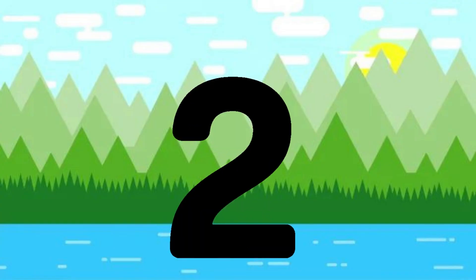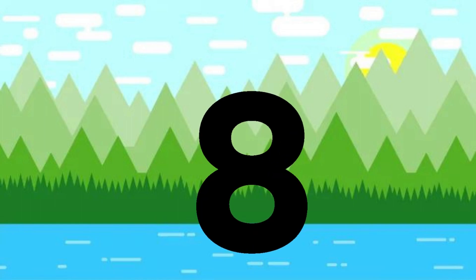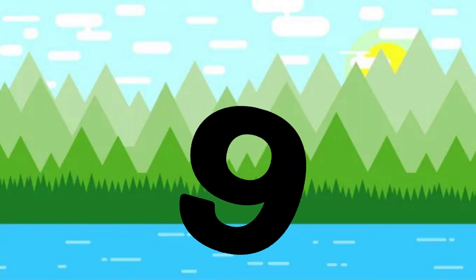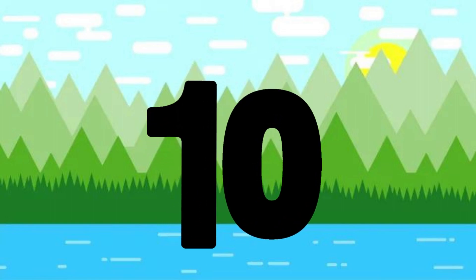One little, two little, three little numbers. Four little, five little, six little numbers. Seven little, eight little, nine little numbers. Ten little numbers.